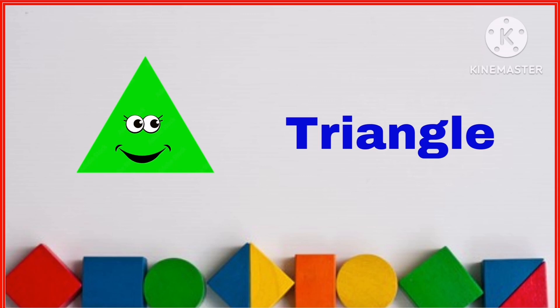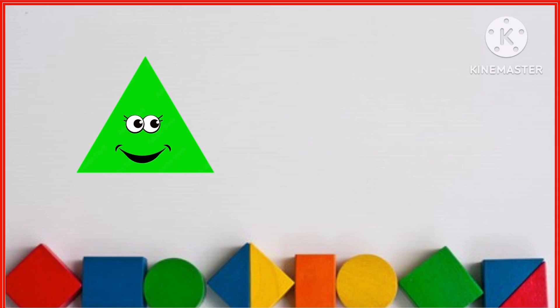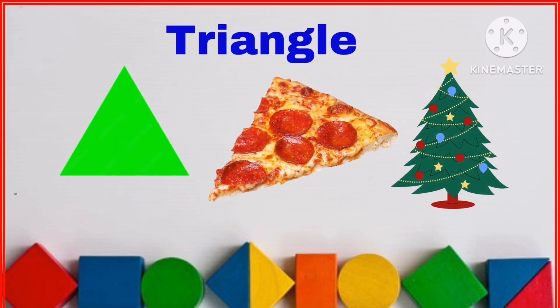I am a triangle. I have three sides and three corners. Example: pizza and evergreen tree.